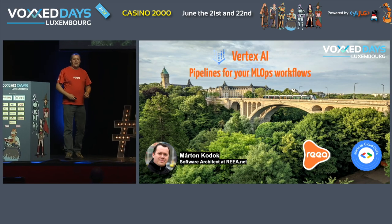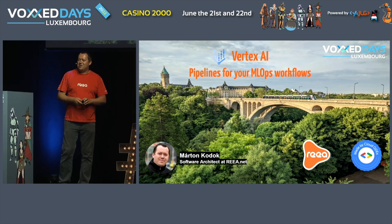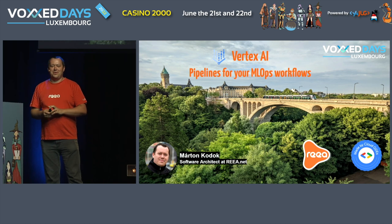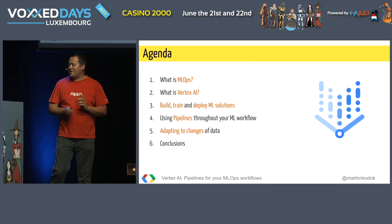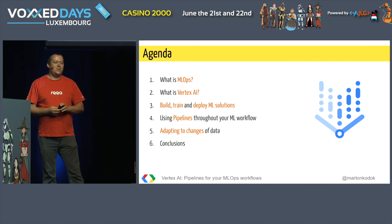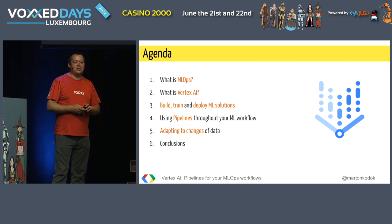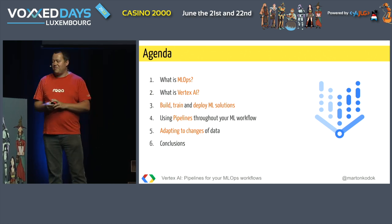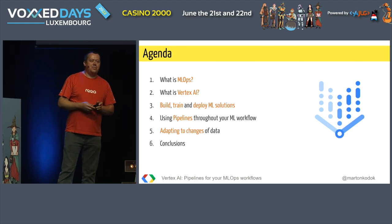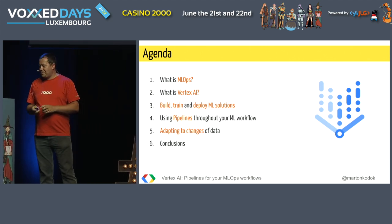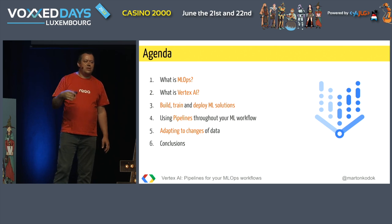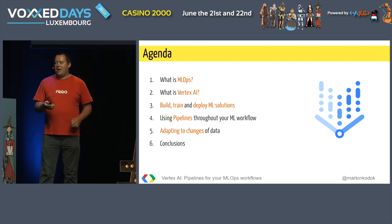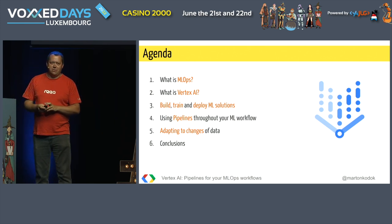Hello. We are here today to hear a talk about Vertex AI and pipelines. I brought you an interesting topic for the audience. Let's see what we are going to cover today. First of all, we are going to discuss what is MLOps — machine learning ops — doing something like DevOps but for machine learning purposes. Then we will see what is Vertex AI, a product of Google Cloud Platform. We will see the steps to build, train, evaluate, deploy models briefly, because I will talk mostly about using pipelines for your machine learning workflows.